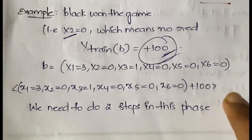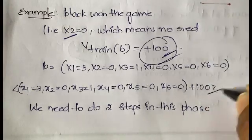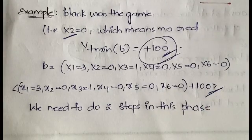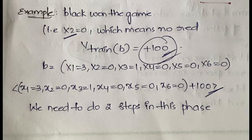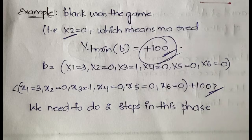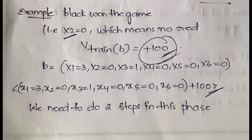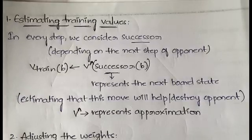Once you have represented the training example, you need to follow two steps in the process of approximation. The first step is estimating the training values, and the second step is adjusting the weights. Weight is the importance or weightage of a particular feature. You first estimate the training values, and if the estimations are not appropriate, you then adjust the weights.